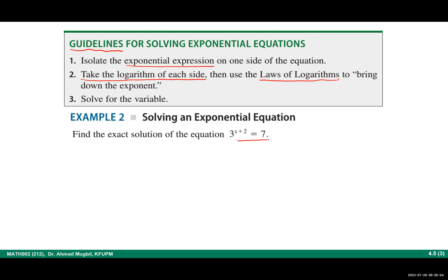Here we have an interesting example where we don't have the same base. If the bases were the same, you would just use the one-to-one property. But here the bases are different. One way is to apply the guidelines: the exponential expression is already isolated — that is step one. Now take the logarithm of both sides. You can take log base 10, ln, or log base 3. Let's take the common logarithm (log base 10) of both sides.